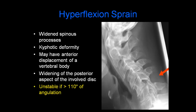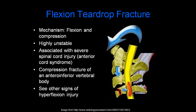With a hyperflexion sprain, there are widened spinous processes — visible with the red arrow — and a kyphotic deformity shown with the yellow lines. You may have anterior displacement of one vertebral body on another, as well as widening of the posterior aspect of the involved disc. This is considered unstable if there are greater than 11 degrees of angulation. A flexion teardrop fracture is a serious injury occurring with flexion and compression — highly unstable and associated with severe spinal cord injury, most often the anterior cord syndrome. It is a compression fracture of the anteroinferior vertebral body, with other signs of hyperflexion injury.